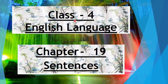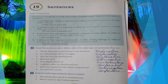Good morning class. This is fourth class English language and we have started chapter 19 on sentences. In our last session we understood what a sentence is — a sentence is a group of words that makes complete sense. Next, we covered types of sentences: there are four types.